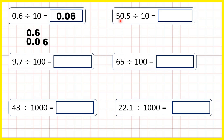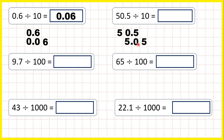Now we have 50.5 divided by 10. So we write out the number and copy down the decimal point. We're dividing, so digits are moving to the right, and dividing by 10 means digits move one square to the right. If we copy down all of our digits one square to the right, that gives us 5.05. So that's our answer.